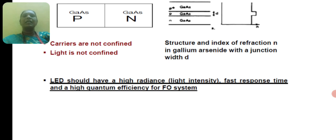In this diagram, P and N are from gallium arsenide, so there will not be any recombination and light is not confined. The structure and index of refraction in gallium arsenide with a junction width d. An LED should have high radiance light intensity...